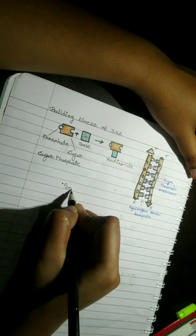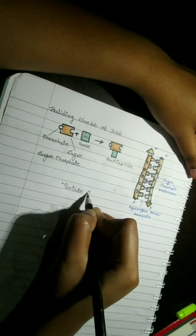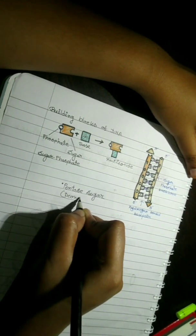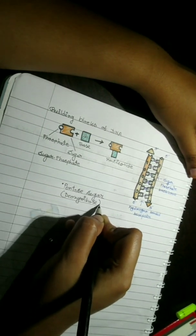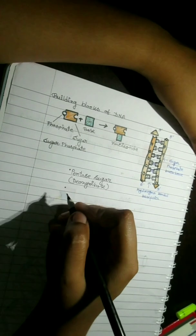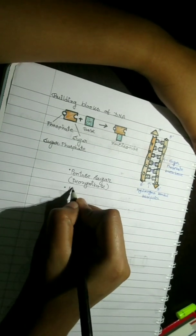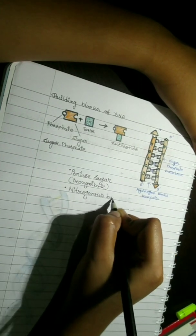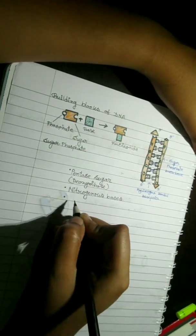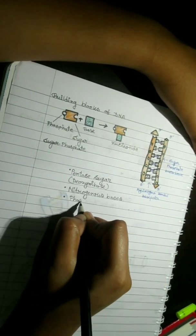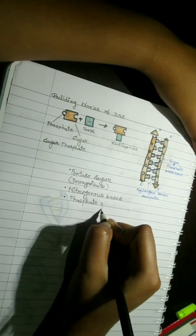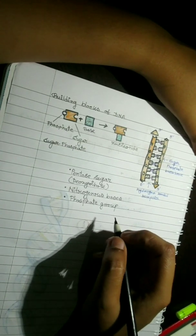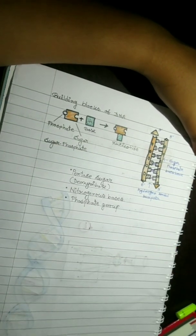In case of DNA, the nucleotide is composed of a pentose sugar, i.e. deoxyribose, a nitrogenous base, i.e. nitrogen-containing base, and a phosphate group. Let's have a deeper insight of each component of nucleotide.